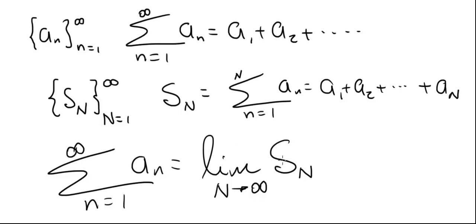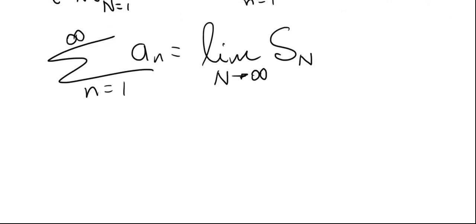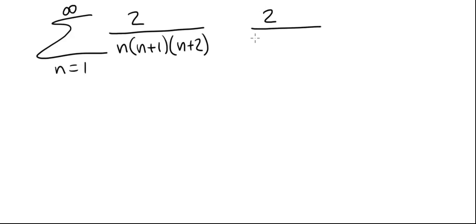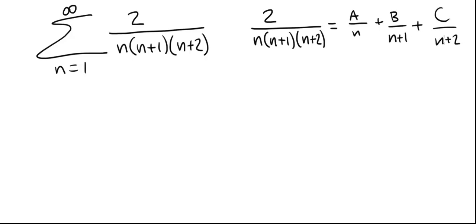In practice, it's very difficult for most cases to find a closed form for S sub N so we can evaluate the limit. But in this case we can do it because we're working with what's called a telescoping series, where a lot of the middle terms will cancel. We'll be left with just a few terms in terms of N. To do it, we use a technique called the method of partial fractions. We're going to break down the rational function 2 divided by n times n plus 1 times n plus 2 into three simpler rational functions: A over n plus B over n plus 1 plus C over n plus 2, because the denominator is a product of three distinct linear terms.